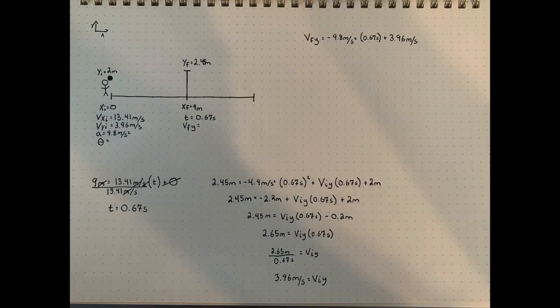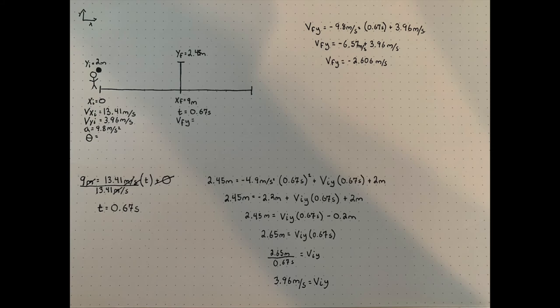Now we'll find the final y velocity which is equal to negative gravity times 0.67 seconds plus initial velocity of 3.96 meters per second, equaling final y velocity of negative 2.606 meters per second.